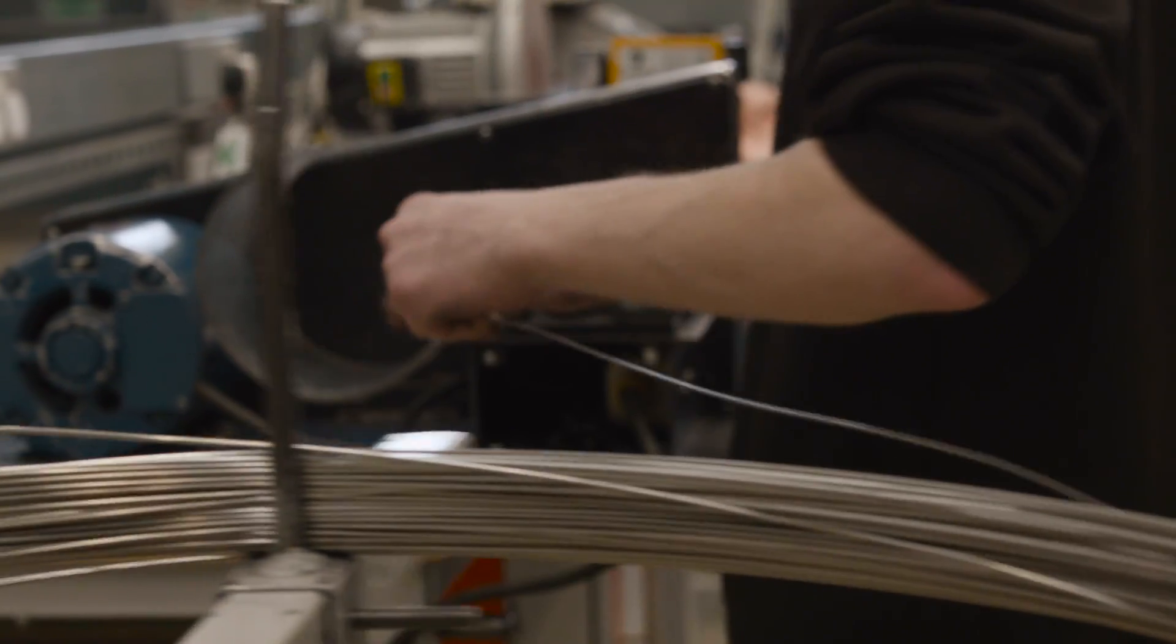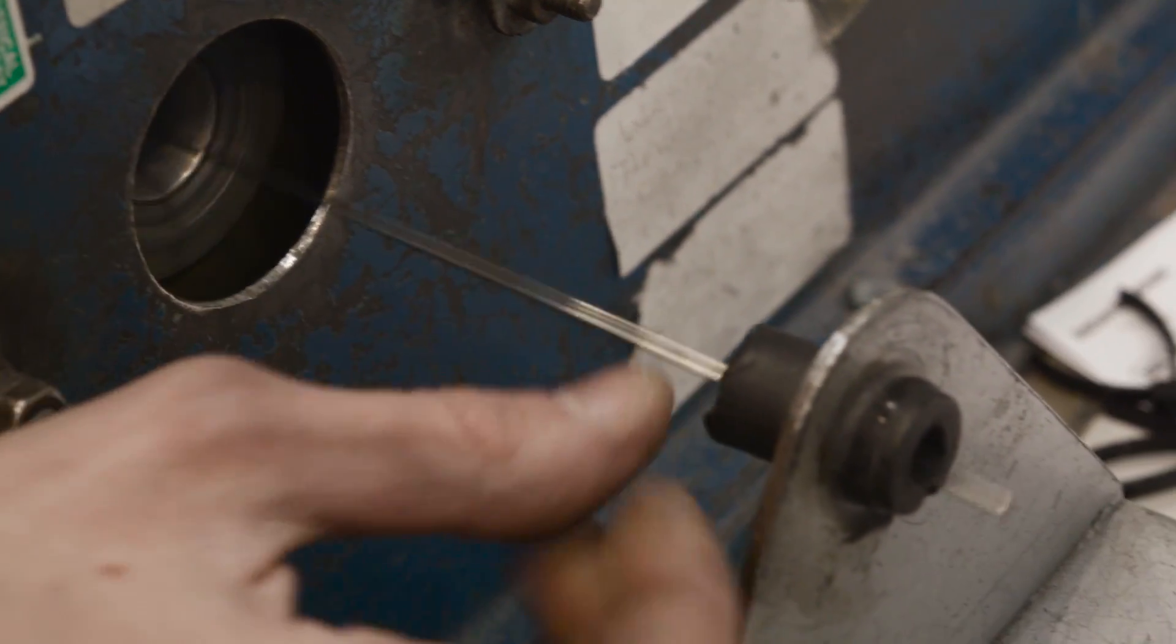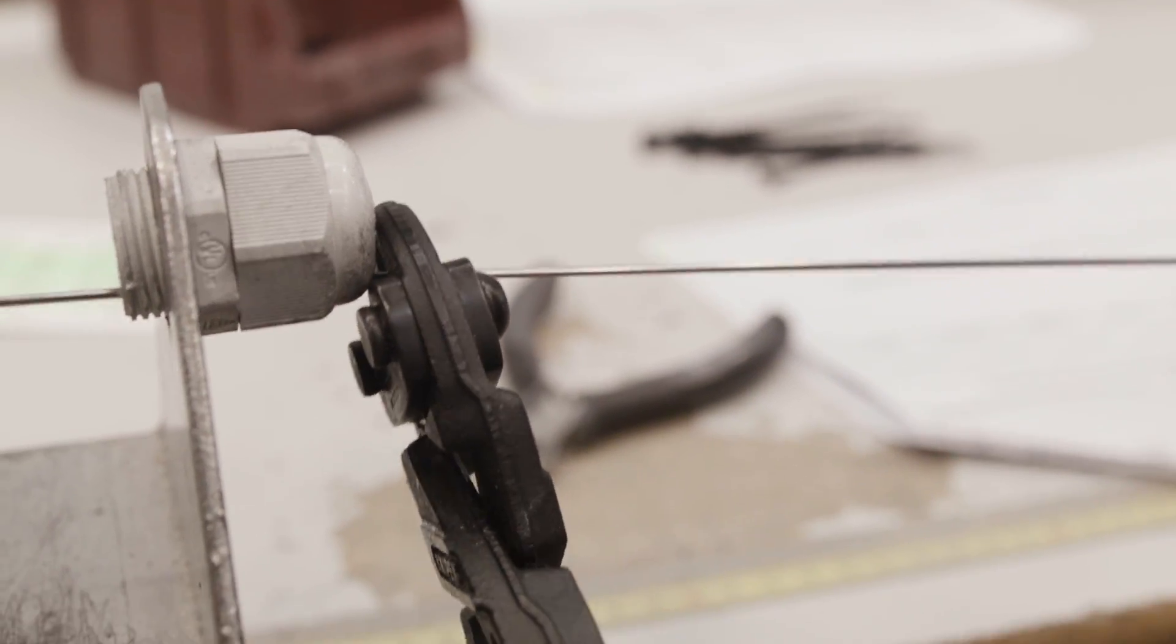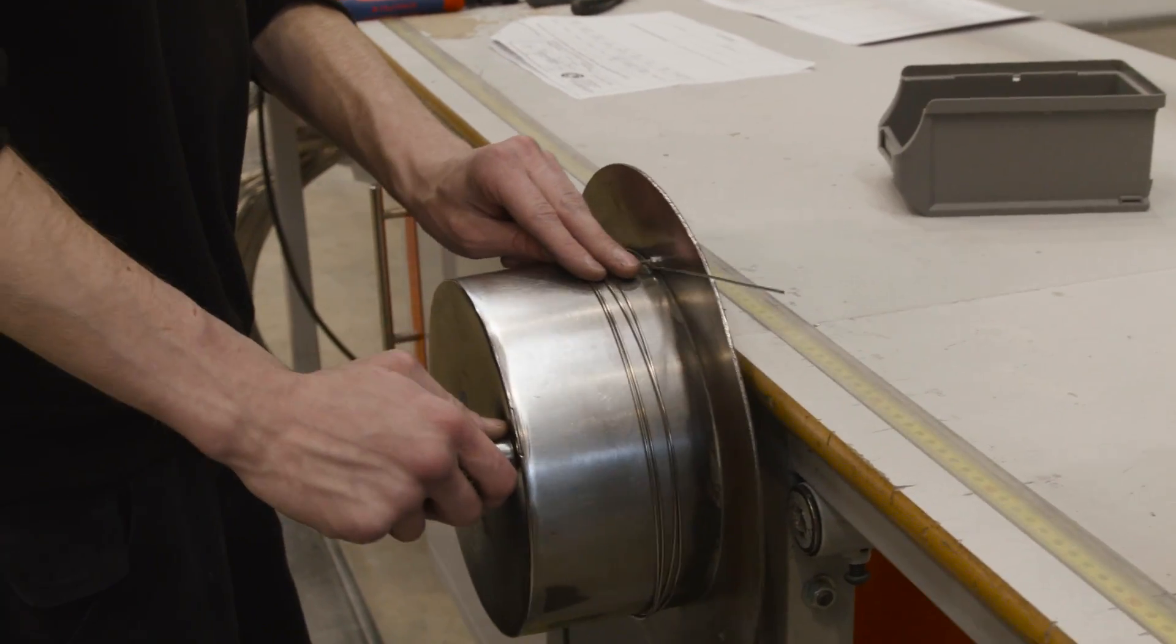Once the coil to be used has been identified, the cable is straightened, measured, cut to the required length and coiled to a practical diameter for handling.